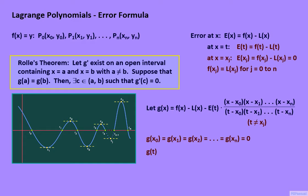Let us see what happens when we replace x by t. The first two terms on the right side give us f(t) - L(t), which is simply E(t). And for the numerator of the fraction in the third term, we get the quantities (t - x₀)(t - x₁)...(t - xₙ). And observe that the fraction is equal to 1. And so what we have is E(t) - E(t), which is equal to 0. And so g(t) is also equal to 0.